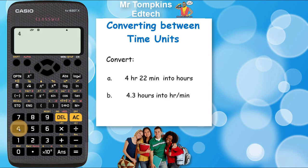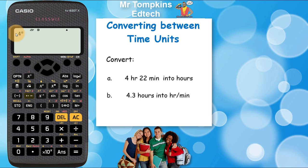In order to do that, I'm going to press the 4 from the 4 hours in first. And then I'm going to use this time key here. It looks like a little circle, followed by an apostrophe, followed by a double apostrophe. That's the button we need to press. When I press it, it's going to write a little circle next to the 4, which represents 4 hours.